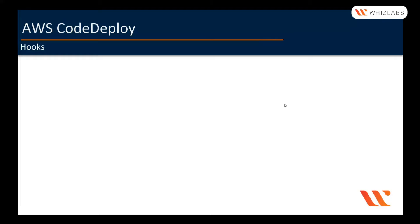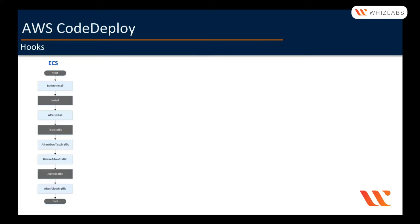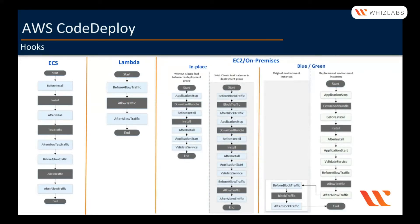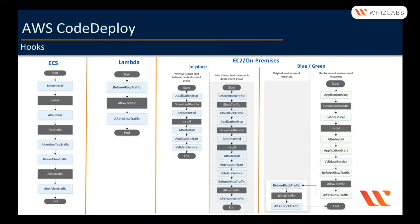Now let's briefly take a look at the hooks available for us to provide in the AppSpec YAML file. These are the hooks available for ECS, for Lambda, and for EC2 and on-premises instances. CodeDeploy follows this order while executing the hooks sequentially. You can provide one or more scripts for each hook, and they get executed in this order. The ones in gray color cannot be scripted — they are used by CodeDeploy internally. For more detailed information on hooks, you can visit the AWS documentation.